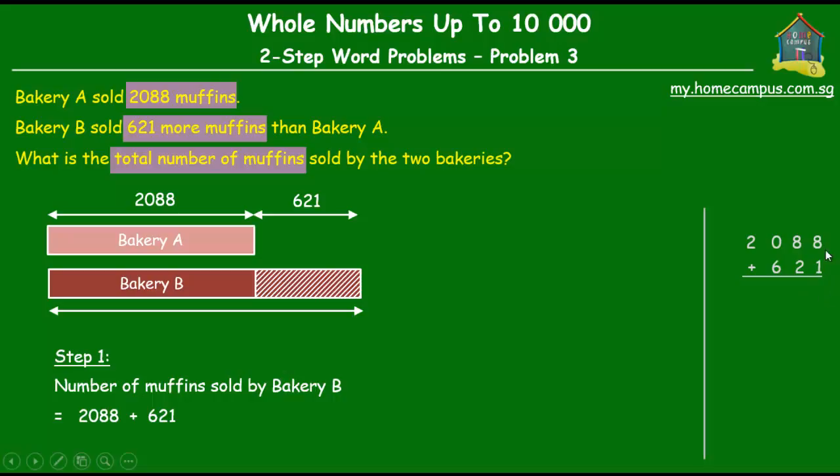Okay. All right. So let's do the addition here. 8 plus 1 is 9, 8 plus 2 is 10, 1 plus 6 is 7, and 2 is just 2. So Bakery B sold 2,709 muffins.